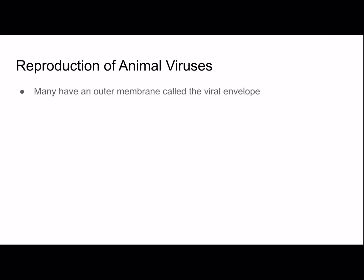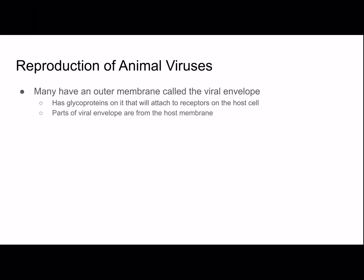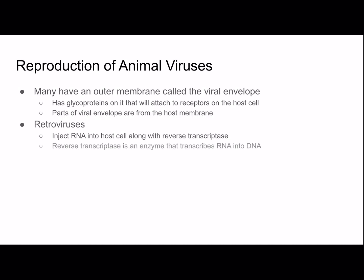The lytic and lysogenic cycles were for bacteriophages. Animal viruses work somewhat differently — many have an outer membrane called the viral envelope, which has glycoproteins that attach to receptors on the host cell. Parts of the viral envelope are actually made from the host membrane when the virus leaves the cell. Retroviruses are viruses that inject RNA into the host cell along with reverse transcriptase, an enzyme that transcribes RNA into DNA — the opposite of normal transcription. That DNA is then integrated into the host DNA, creating what's called the provirus.